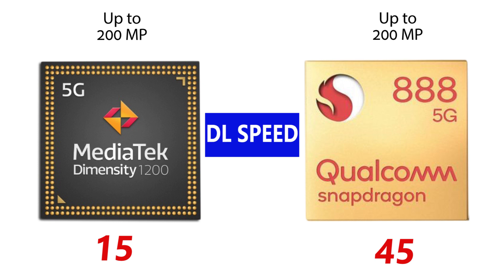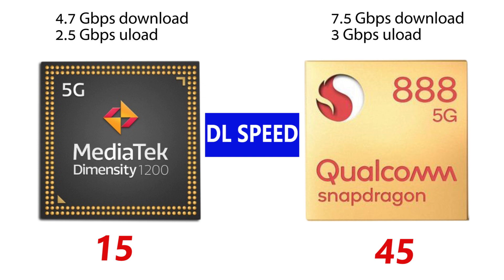At its highest speed, the Snapdragon 888 can download up to 7.5 GB per second and upload speed is up to 3 GB per second, which surpasses the Dimensity 1200's 4.7 GB per second download speed, adding 10 points to the Snapdragon 888.